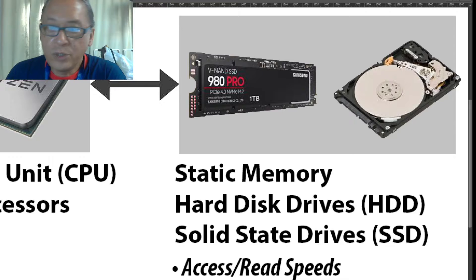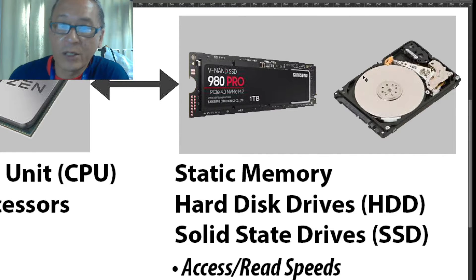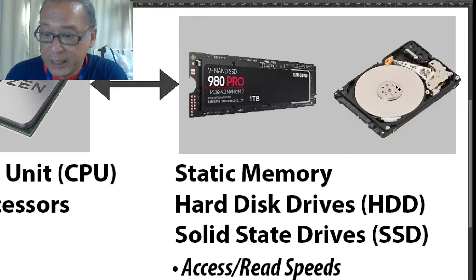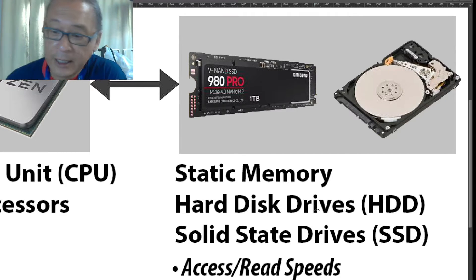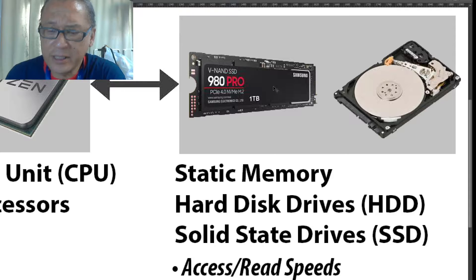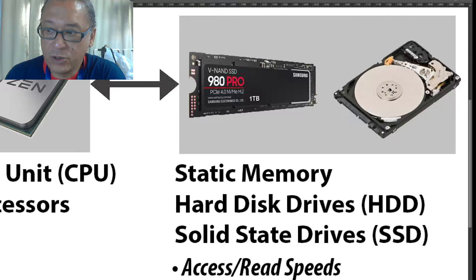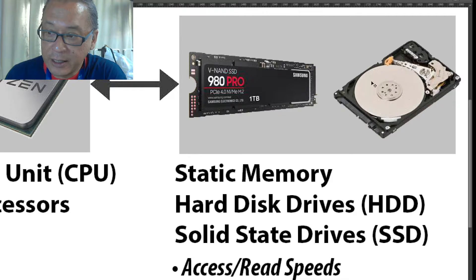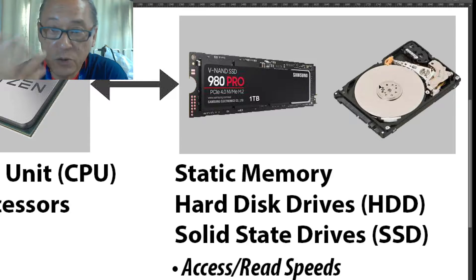These two images show the two types of hard disks available in the market today. The one on the right is your hard disk drive — your standard hard disk. The one on the left is your solid state drive, or SSD. Your traditional hard disk, the cheaper version, has a spinning disk inside. This thing goes round and round physically spinning.